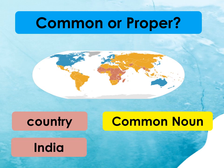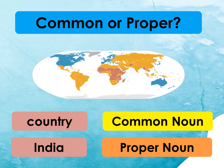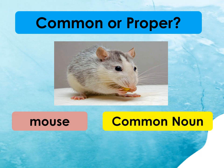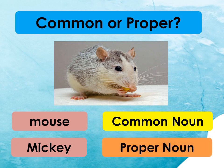Mouse — that's correct, it's a common noun. Mouse is the general name of an animal and it starts with a small letter. Mickey — that's correct, it's a proper noun. Mickey is the specific name of an animal and it starts with a big letter.